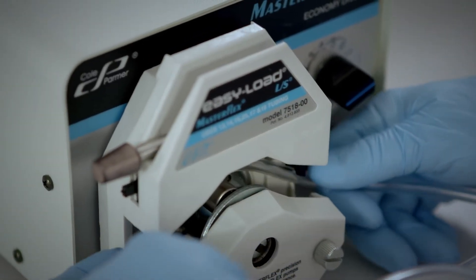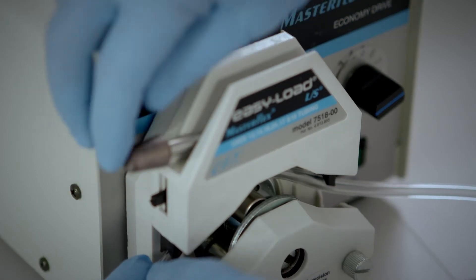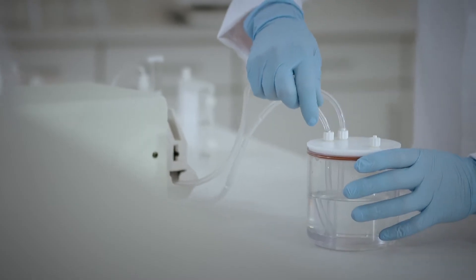Next, connect the inlet tubing to the VivaFlow 50R cassette and thread the tubing in the pump head. Then also attach the end of the tubing to the diafiltration reservoir.